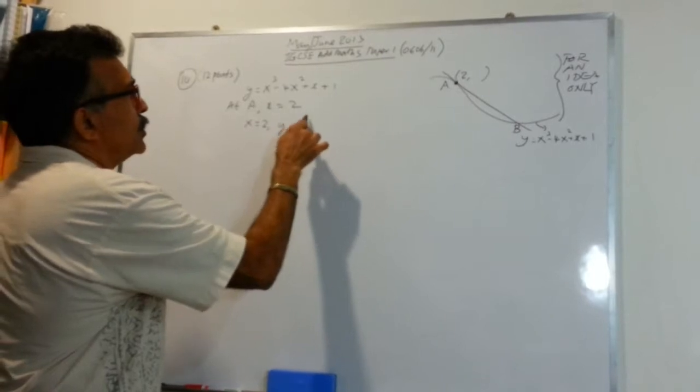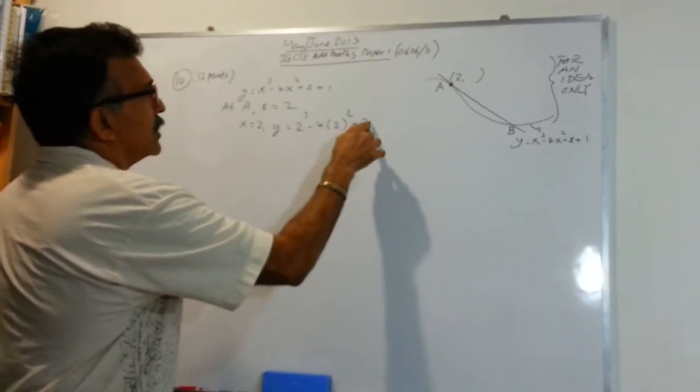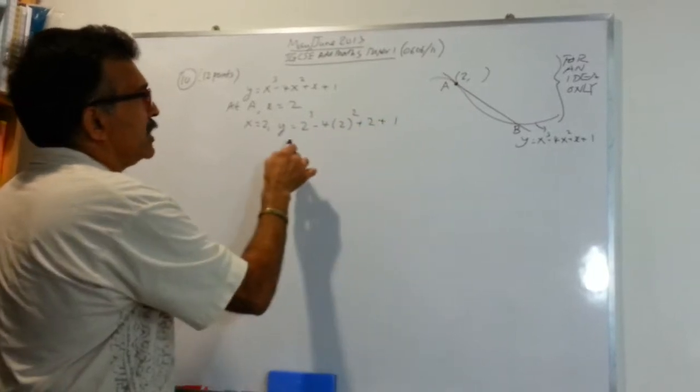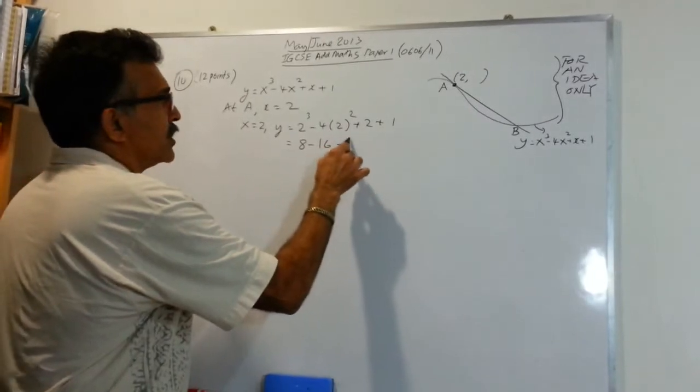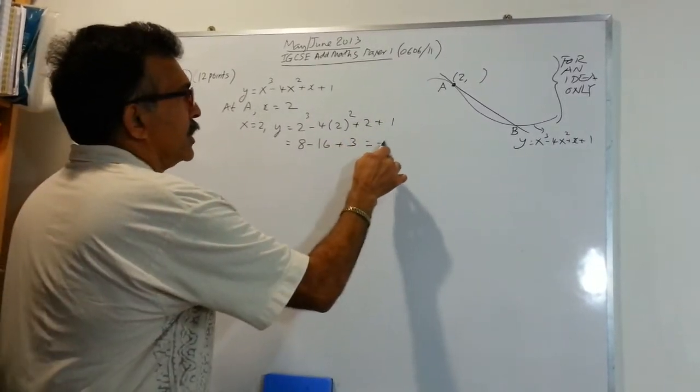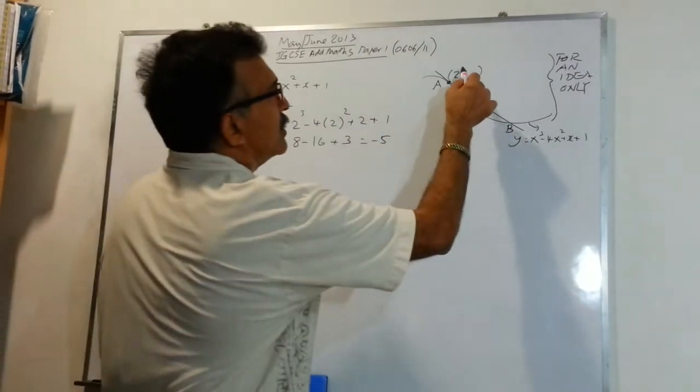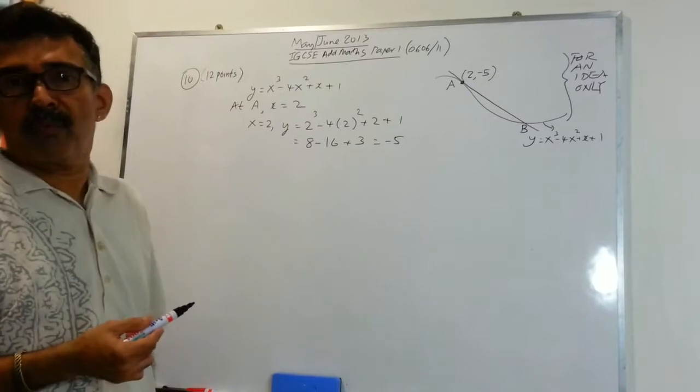y will be equals to 2 cubed minus 4 times 2 squared plus 2 plus 1. When you clean this up, you will get 8 minus 16 plus 3, so I'll get negative 5. So let's plug it in to negative 5. Now we have the coordinates of the point A.